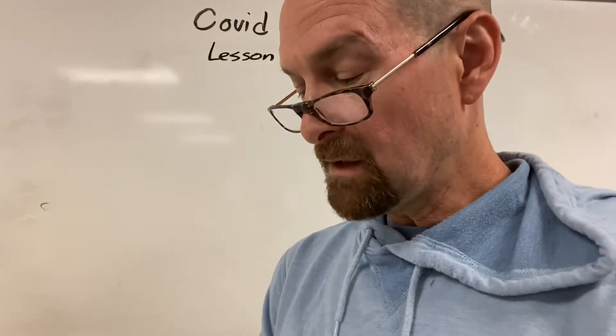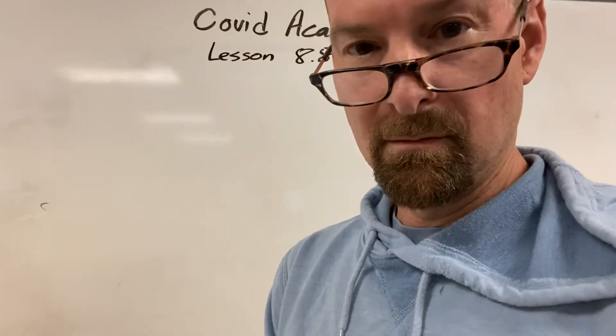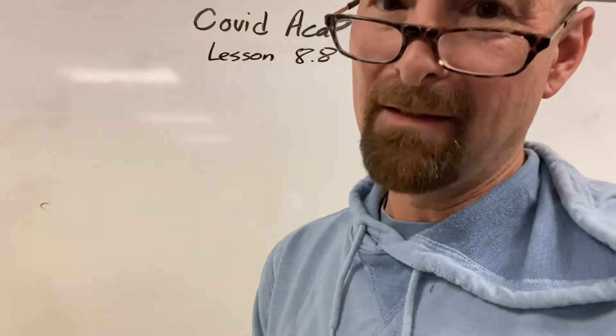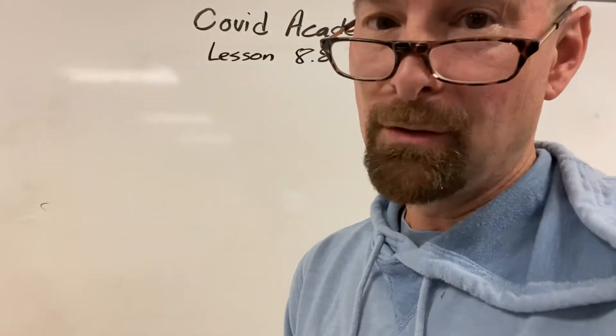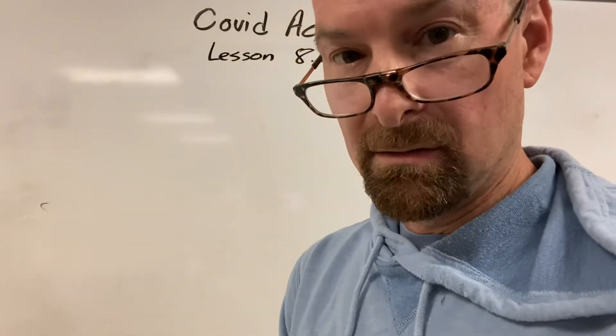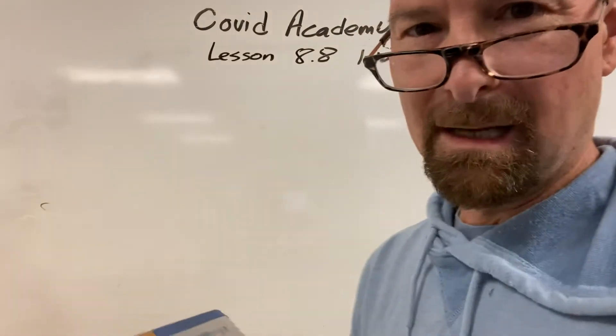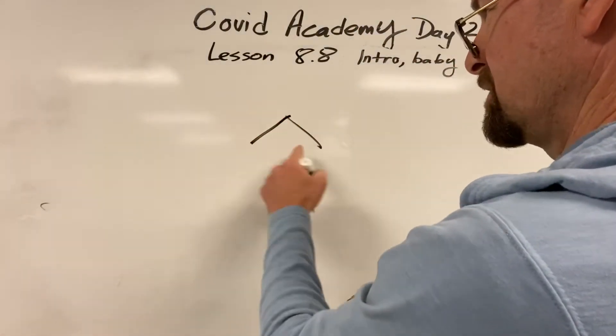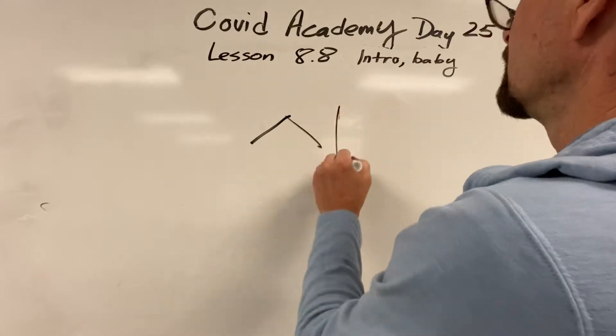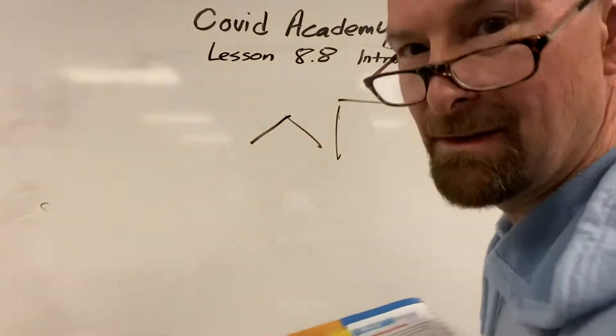Next: a trapezoid always has only one pair of parallel sides. Bzzzt — false. It can have more than one. It usually does only have one pair, but it can have more. You lose on that one. Next: a rectangle can also be a kite. No. Because kites have to have the sides that are touching each other the same length, and that's exactly what a rectangle is not — that side is shorter than that one.